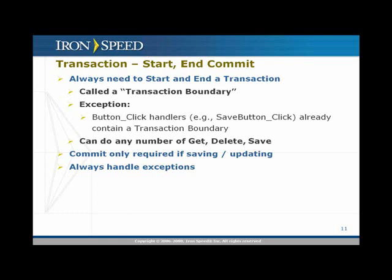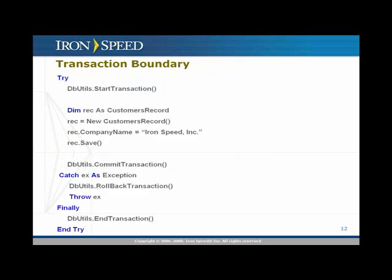The transaction boundary code uses a utility set of classes and methods. You call DbUtils.StartTransaction and DbUtils.CommitTransaction, RollbackTransaction, and EndTransaction. You can do this in a try-catch block. The VB.NET code is shown here, but C# code looks the same except adding semicolons and changing DIM declarations. This is what you need for a transaction boundary.